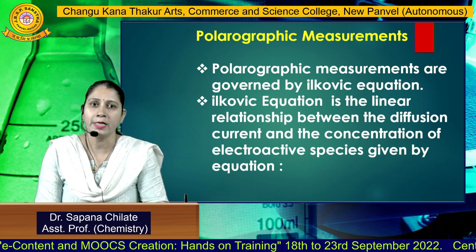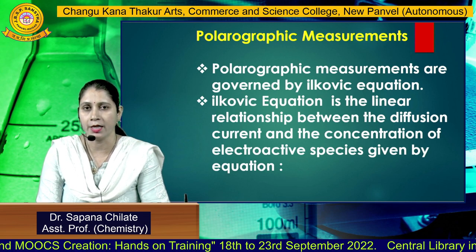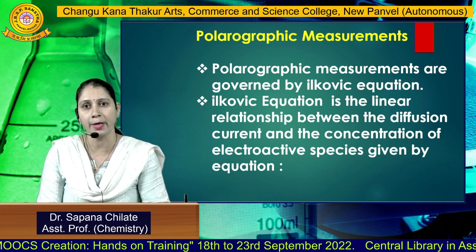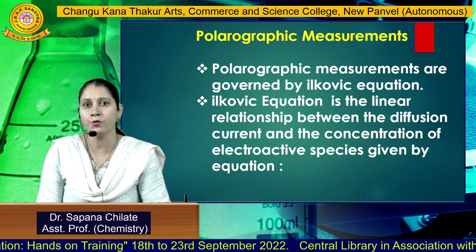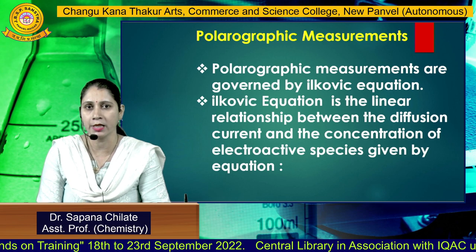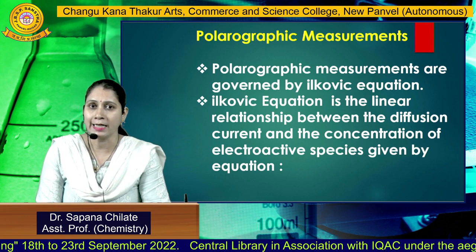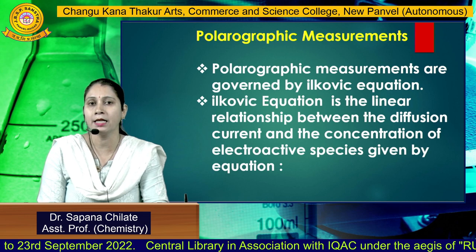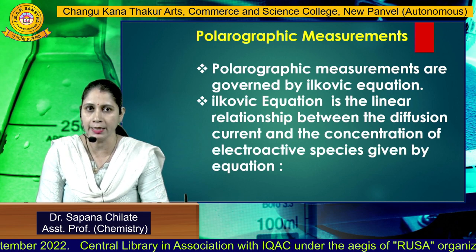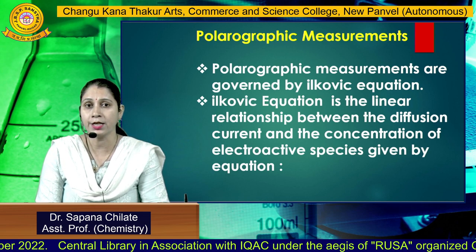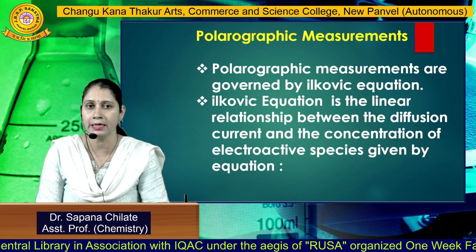The polarographic measurements can be governed by the Ilkovic equation. If we have to determine the concentration of a particular substance, we can calculate it using the Ilkovic equation. The Ilkovic equation expresses the linear relationship between the diffusion current and the concentration of electroactive species present in the solution.